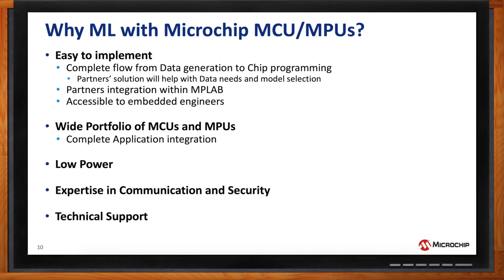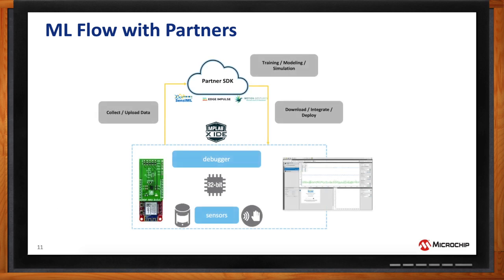For the design flow, within MPLAB there is a special plugin to create your own dataset — important because most customers design unique products and can't just use datasets found on the web. Once you have your dataset, you upload it to one of three main partners: SenseML, Edge Impulse, or Motion Gestures. They help you pick the right model, train it, and return a library or source code you integrate back into your project. You compile it and run it on your MCU locally — a complete end-to-end flow.